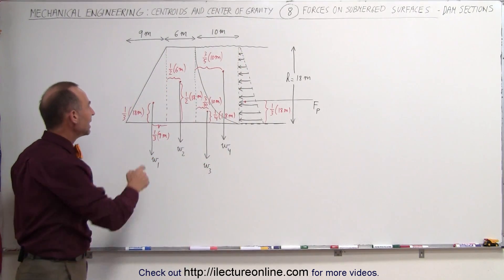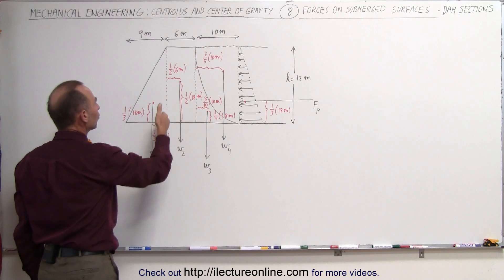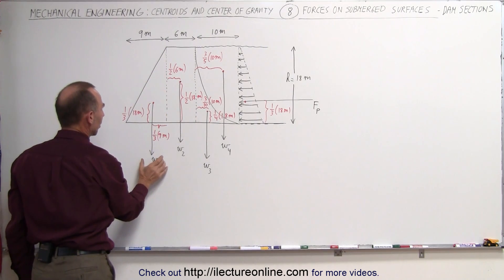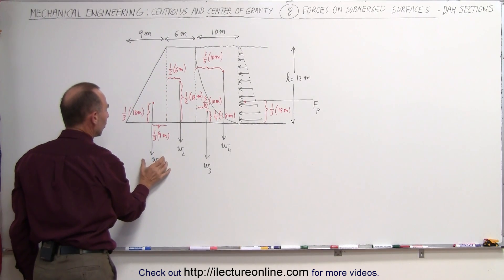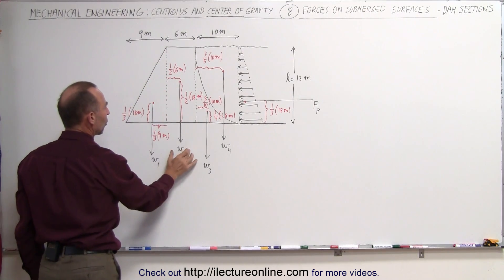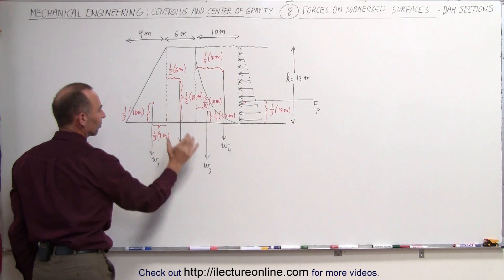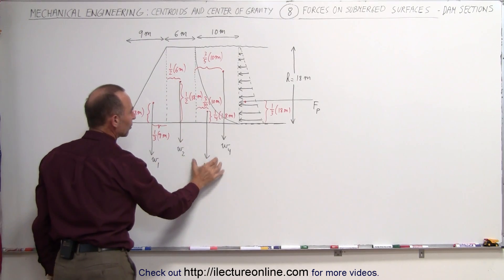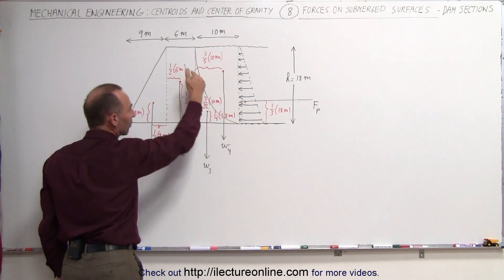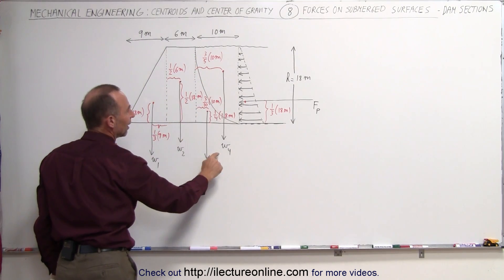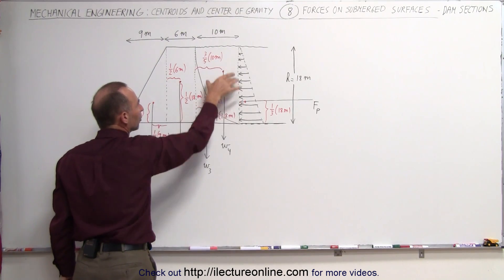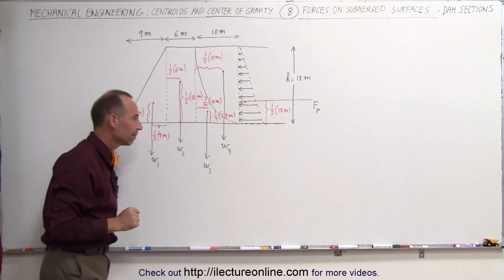We can then take each section and assume it to have a certain amount of weight: W1 for the first section, W2 for the second section, W3 for the third section of the dam — the concrete portion — and finally the weight of the water pushing down on the dam.